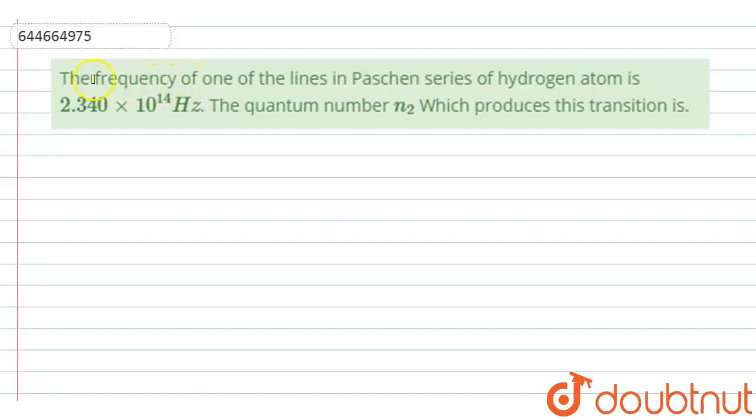The given question is: The frequency of one of the lines in Paschen series of hydrogen atom is 2.340 × 10^14 Hertz. The quantum number n2 which produces this transition is. So we have to find the quantum number value n2 for this transition, and the frequency we are given is 2.340 × 10^14 Hertz.